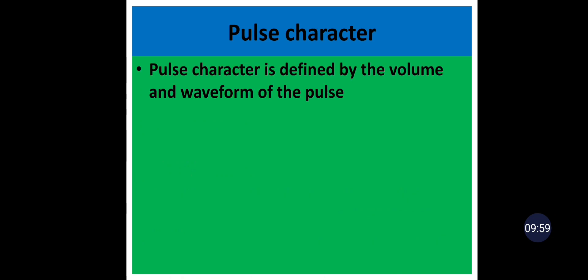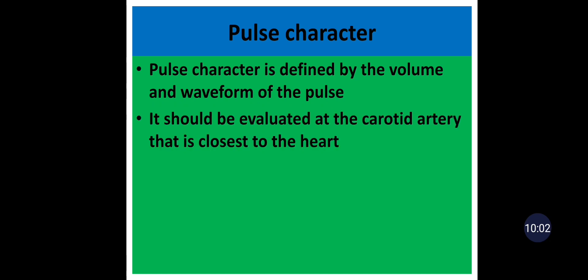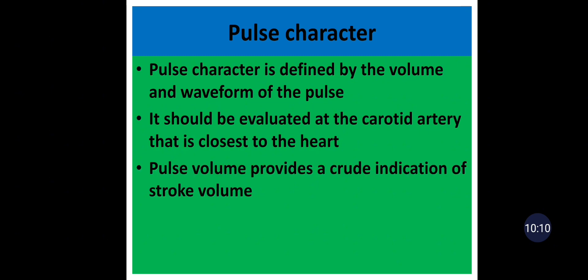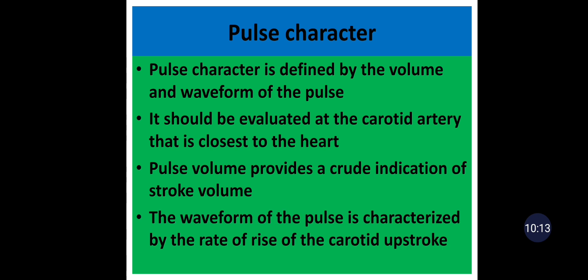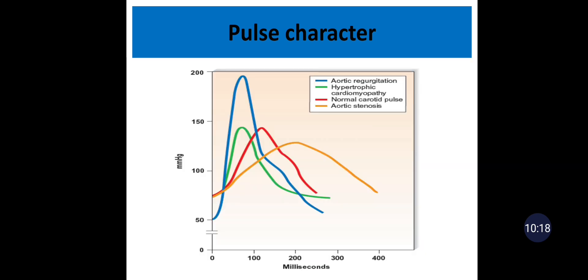Pulse character is defined by the volume and waveform of the pulse. It should be evaluated at the carotid artery, which is closest to the heart. Pulse volume provides a crude indication of stroke volume. The waveform is characterized by the rate of rise of the carotid upstroke. In this picture, the y-axis represents the amplitude of the pulse in mmHg and the x-axis represents time. The blue line, representing aortic regurgitation, has a rapidly rising carotid pulse that collapses slowly.